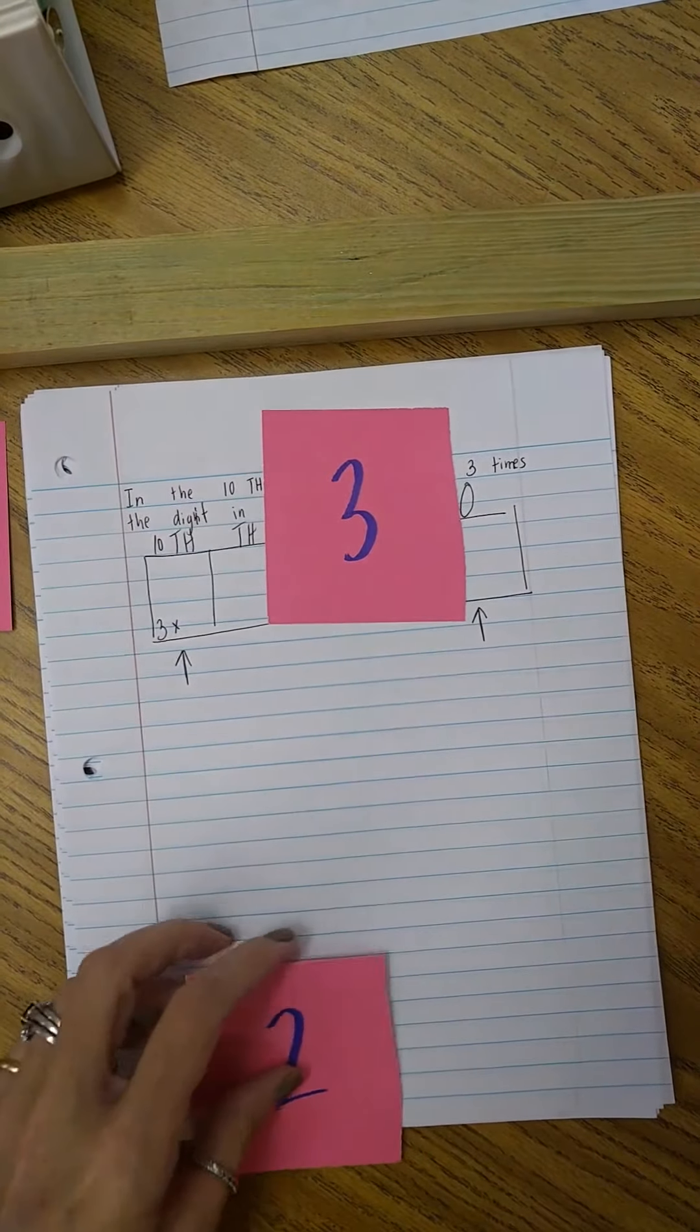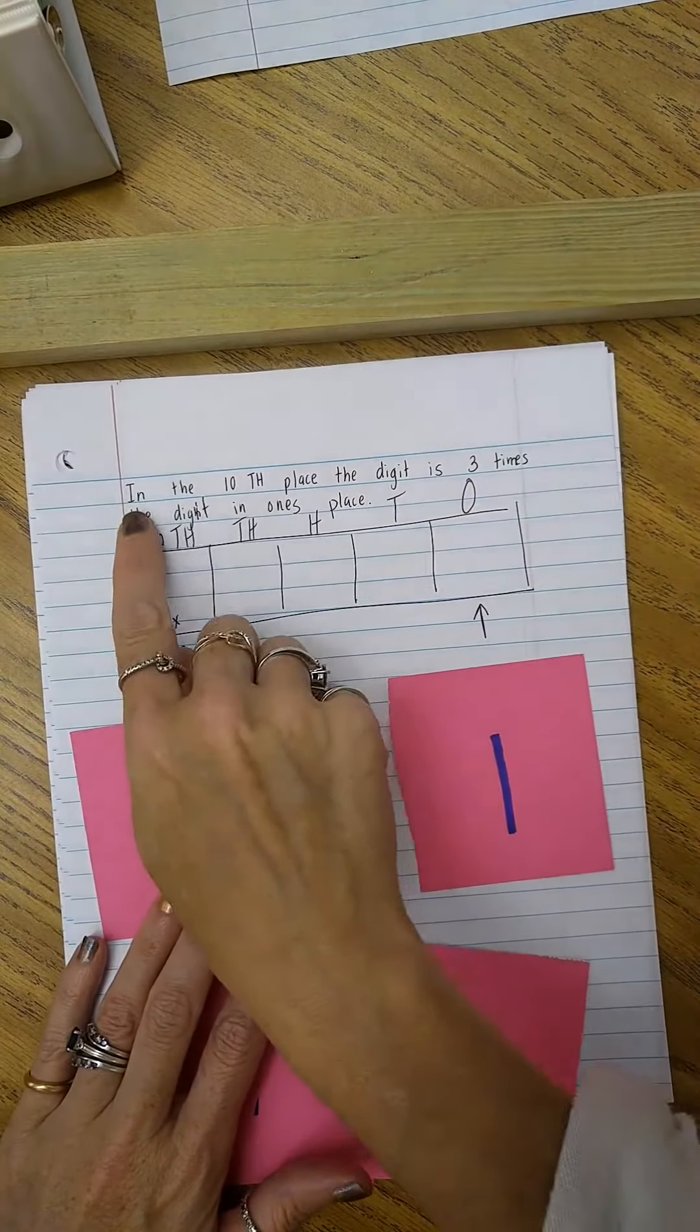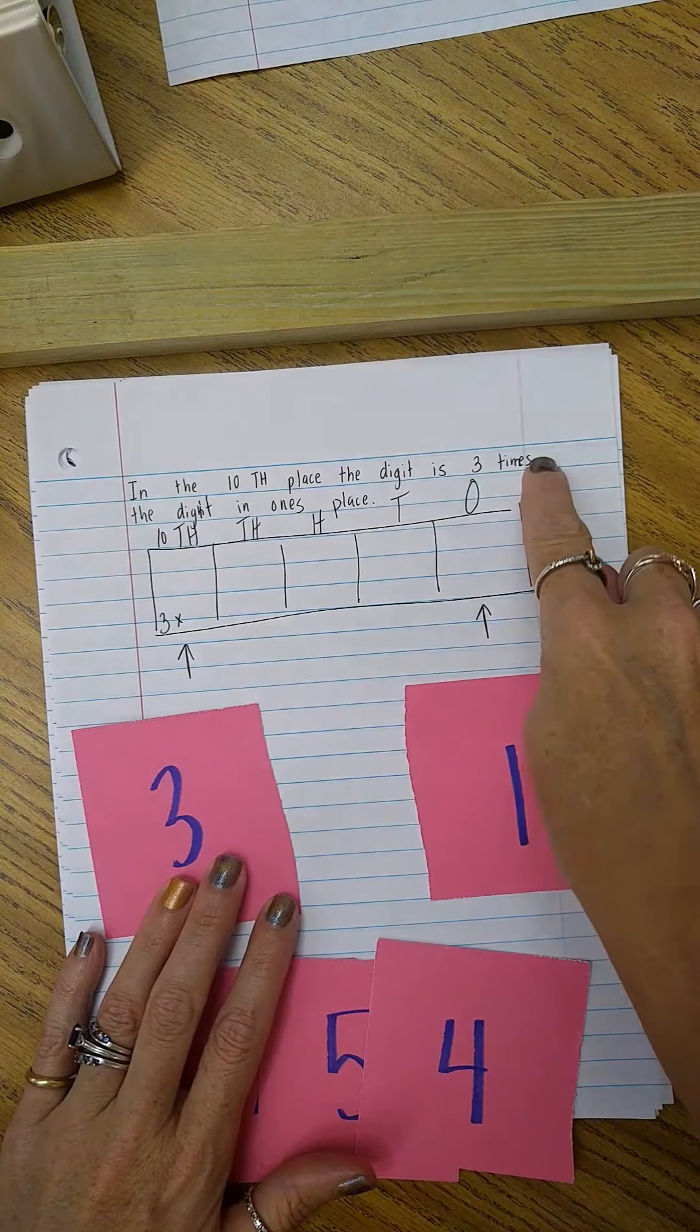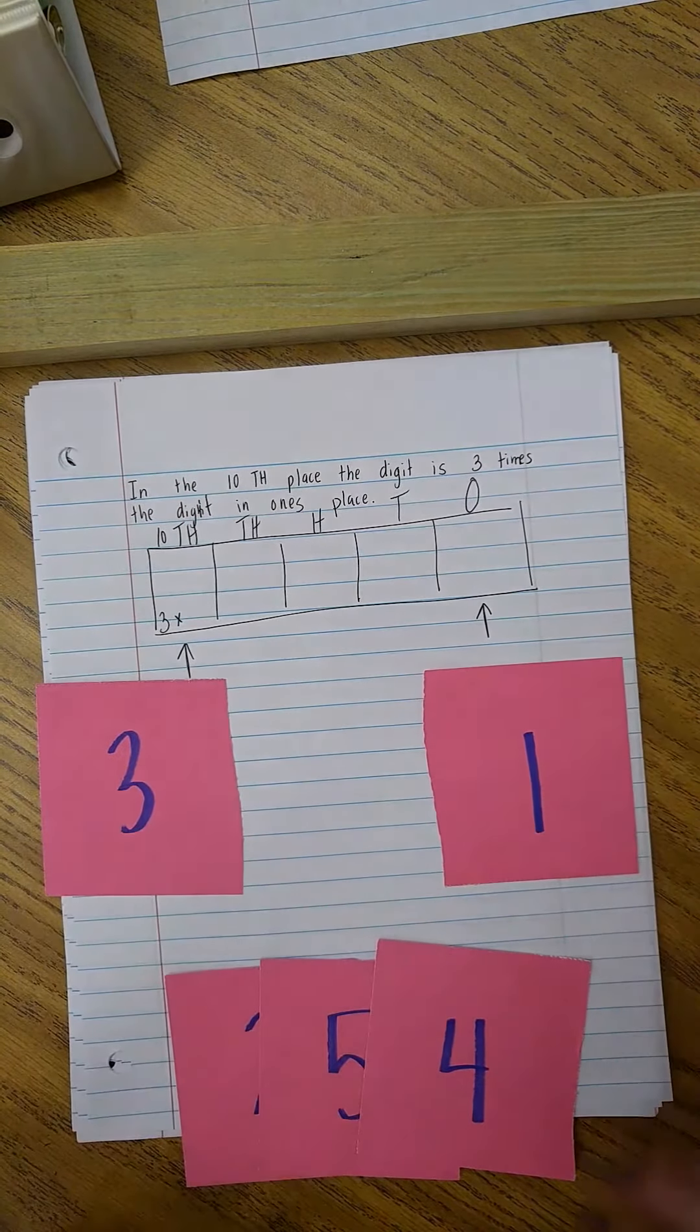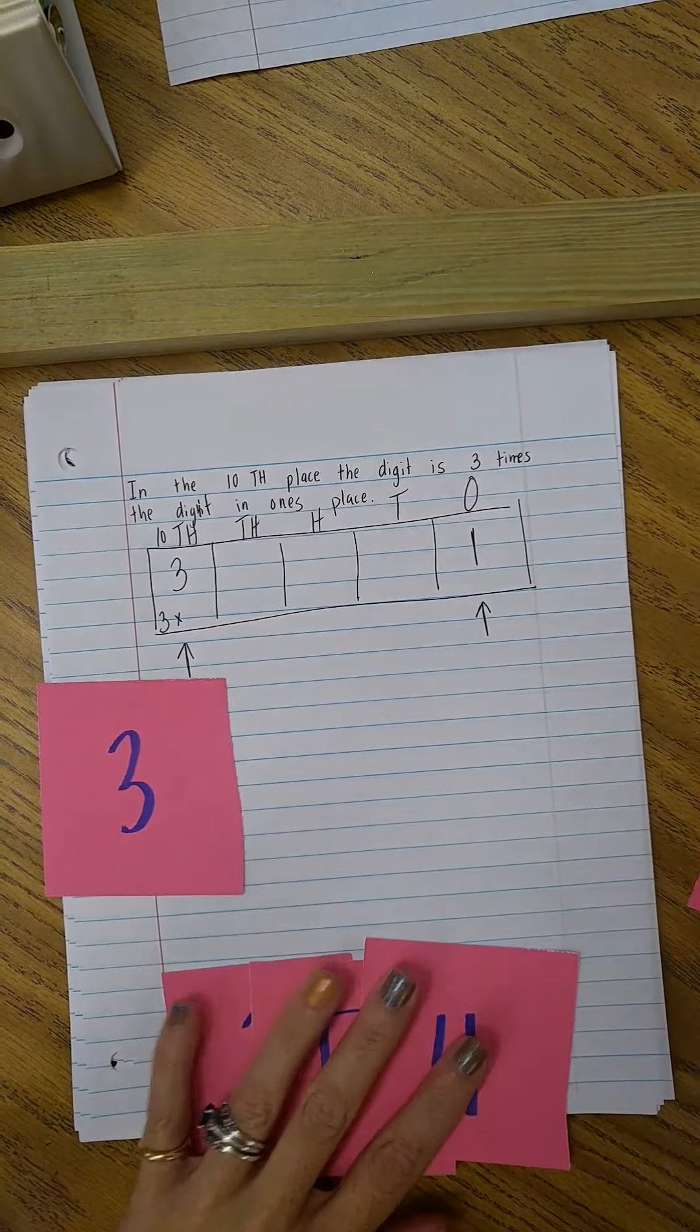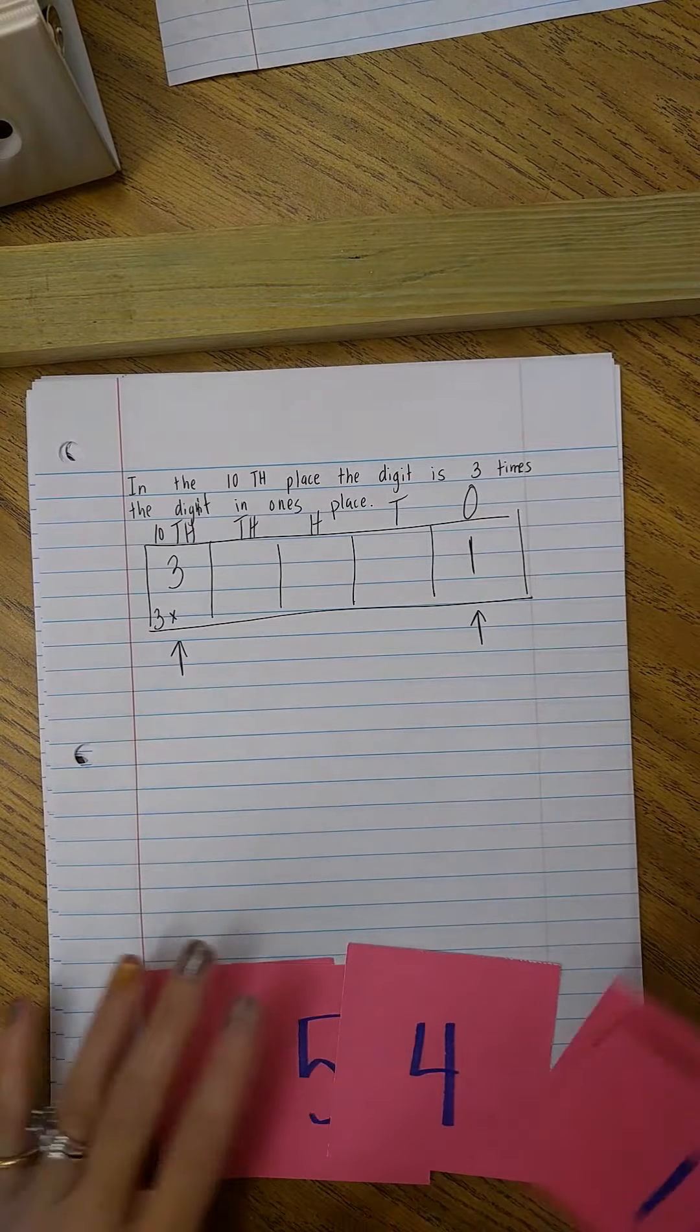So now I can move these cards and I can think about where I'm placing this. In the ten thousands place the digit is three times the digit in the ones place. So this would be in the ten thousands place, so that digit is three, and this digit is one. So that follows the first rule. So basically they're creating a number using a rule.